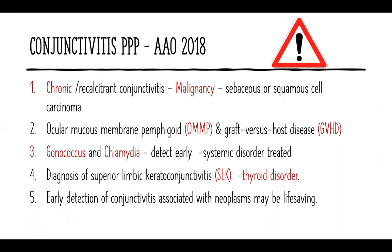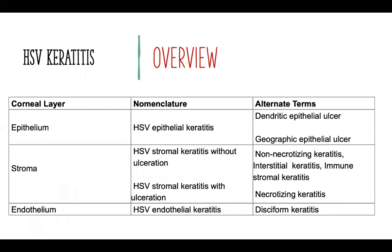Apart from what we've covered, I'd like to highlight some important preferred practice patterns that the AAO 2018 has recommended regarding conjunctivitis. First, whenever you see a chronic or recalcitrant conjunctivitis, always have a high degree of suspicion for malignancy — it could be sebaceous or squamous cell carcinoma hiding beneath. Also consider OCP, graft-versus-host disease, gonococci, or chlamydia, which are systemically associated conditions that can mimic conjunctivitis. Whenever you diagnose superior limbal conjunctivitis, check for a thyroid disorder.